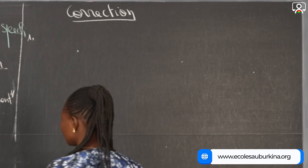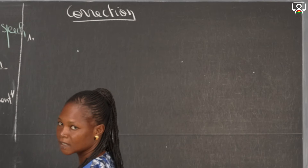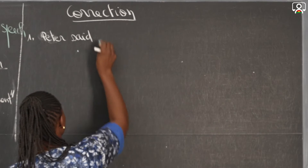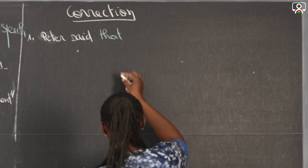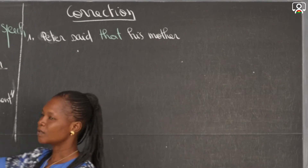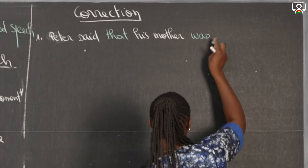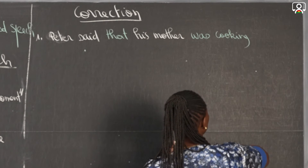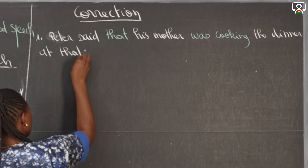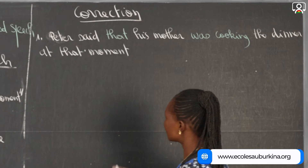Number one: 'My mother is cooking the dinner at this moment,' Peter said. This is a declarative sentence, so we have Peter said that — and since it is Peter who is speaking, we use 'his mother.' The present continuous changes: 'was cooking the dinner at that moment.' Remember, when you have 'this moment' in the direct speech, it changes to 'that moment' in the indirect speech.